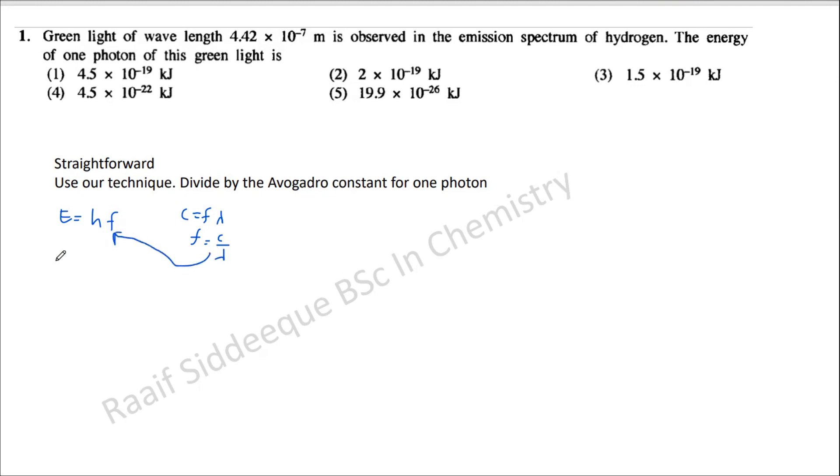You can substitute here frequency is c over lambda. So you can substitute this here and then you will have an equation where E is equal to h c over lambda. This is a constant, this is a constant, and you just need to divide it by the lambda value which is given here in the question to get the energy of a photon.